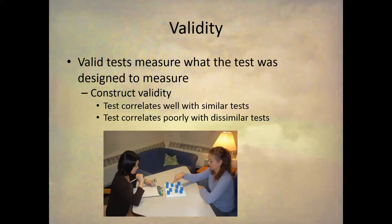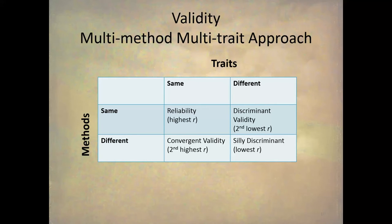The way that we generate information about this is through the construct validity method. We assume that a test should correlate well with similar tests and that a test should correlate poorly with dissimilar tests. If we find that's true, then we have evidence for construct validity.